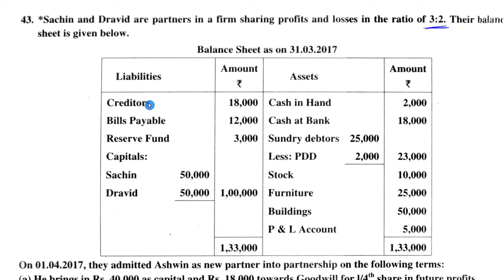Next we have a simple balance sheet. On the liability side: creditors 18,000; bills payable 12,000; reserve fund 3,000; and capital of Sachin and Dravid 50,000 each. On the asset side: cash in hand 2,000 rupees and cash at bank 18,000. Cash in hand means hard cash available, and cash at bank is the amount available in the bank.